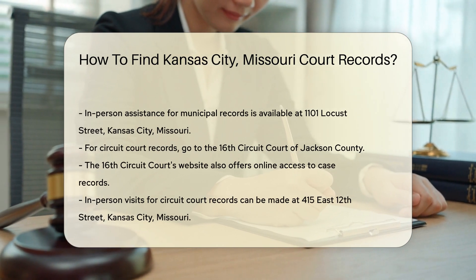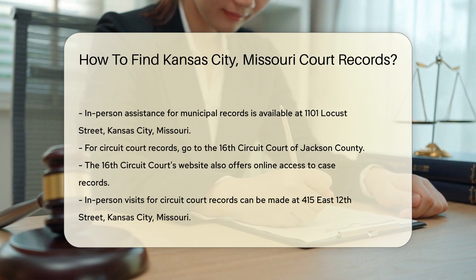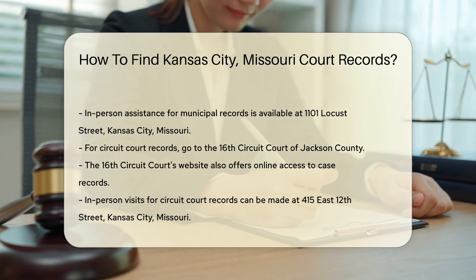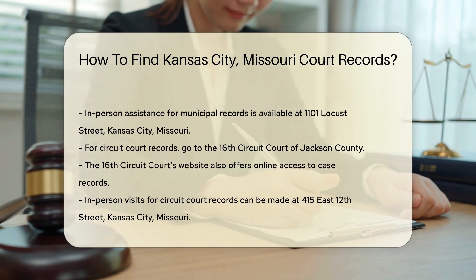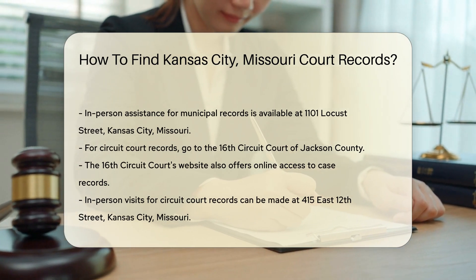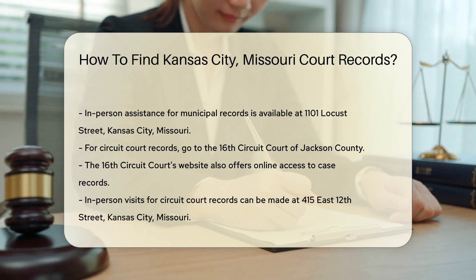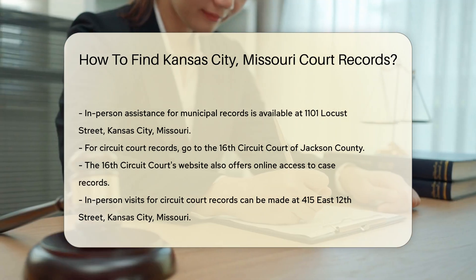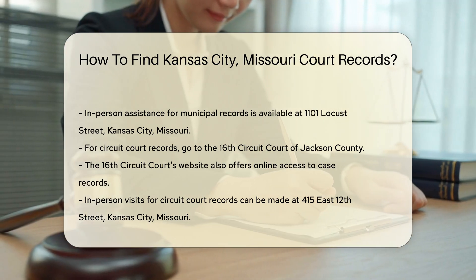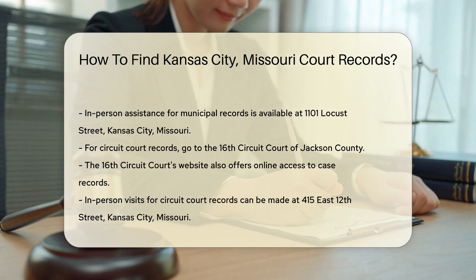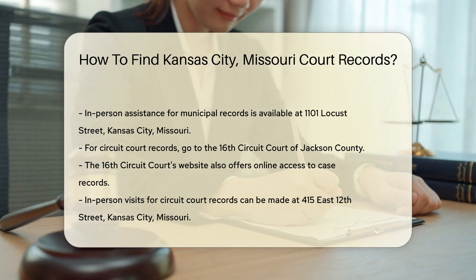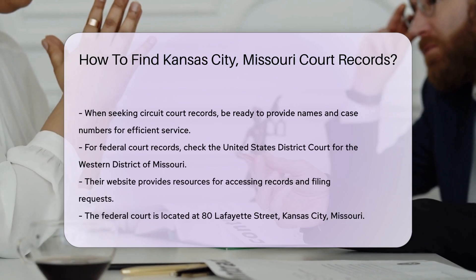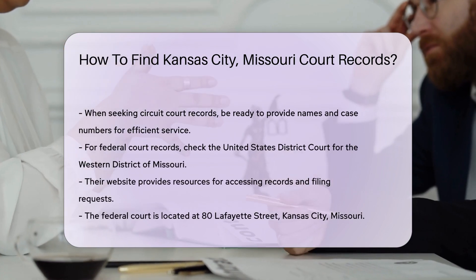If you need circuit court records, the 16th Circuit Court of Jackson County is the place to go. Their website offers online access to case records. You can also visit the courthouse at 415 East 12th Street, Kansas City, Missouri. Be prepared to provide specific details like the names involved and the case number for efficient service.